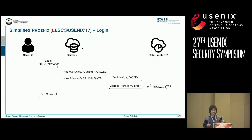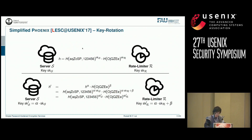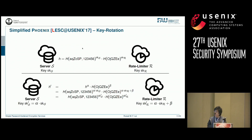If the password is correct, that other half would be a valid PRF value of the rate limiter. The rate limiter checks exactly this, and if it is correct, it says OK and returns a proof that it is correct; otherwise it says so. If the server is convinced the proof is valid, it allows the client to log in. Key rotation is supported almost natively: the server and rate limiter with secret keys SK_S and SK_R can rotate the keys into alpha*SK_S and alpha*SK_R + beta, where alpha and beta are random values. After doing so, the server can rotate all stored hash values in the database without contacting the rate limiter anymore.